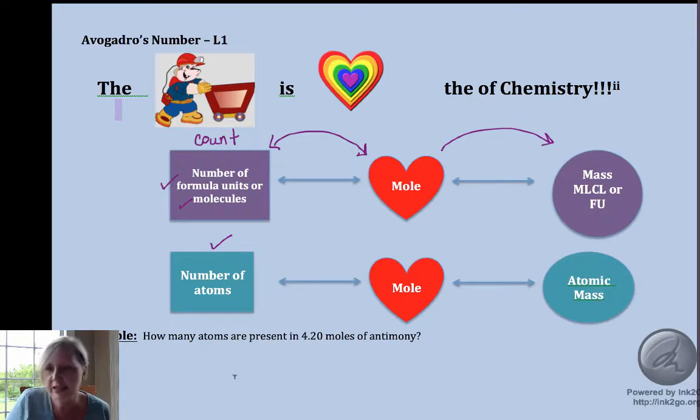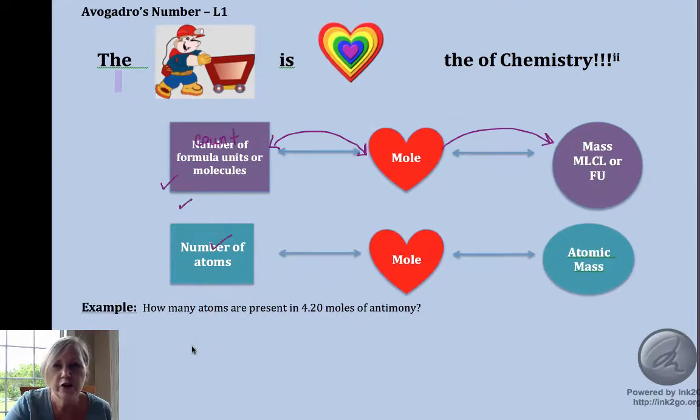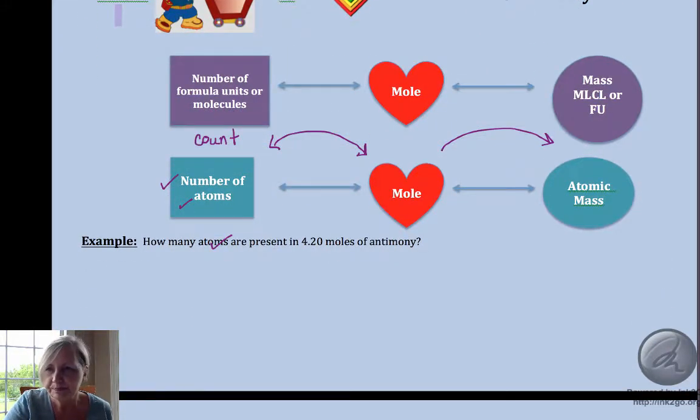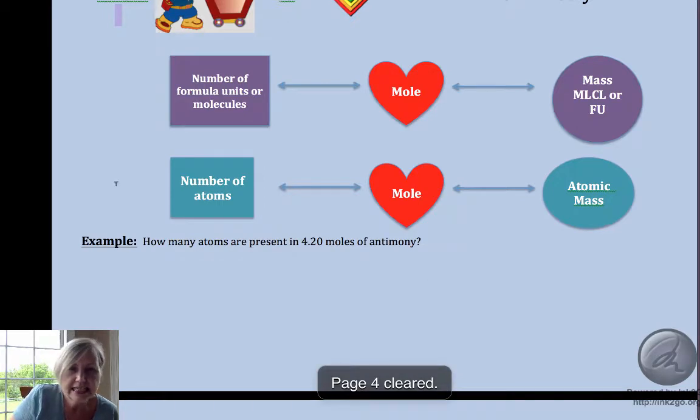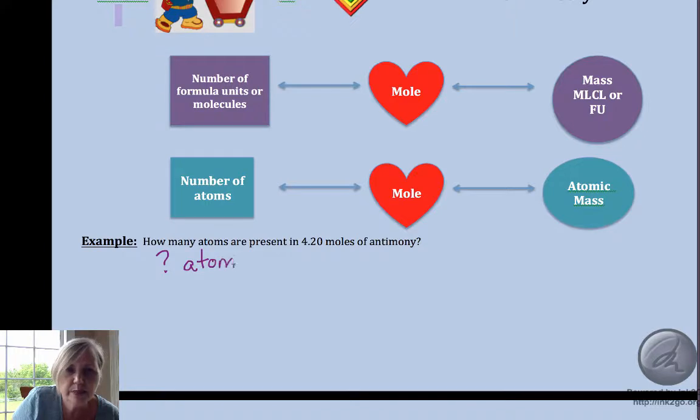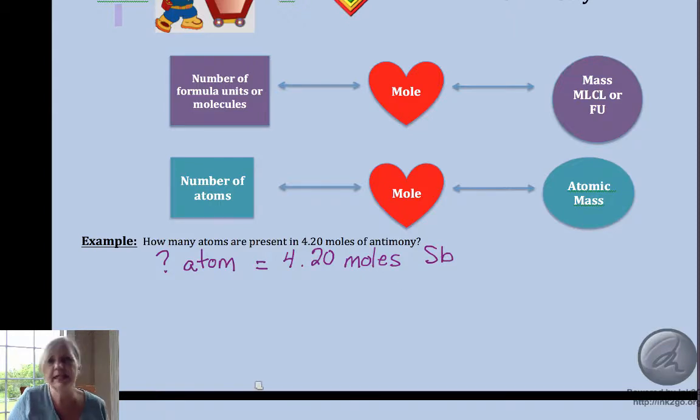In our first math equation, we have a question of how many atoms—an atom is a particle that can be counted—are the equivalent of 4.20 moles of antimony (Sb). That's a one-step problem, so we have atoms and it's asking us to go to moles.